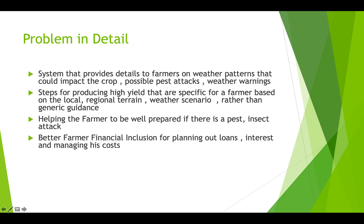The problem statement in detail is: we would require a web portal or a system by which farmers could get information, ask queries regarding weather warnings, pest attacks and so on, steps to produce high yield specific to a farmer based on local regional terrain and weather scenario rather than generic guidance based on the entire city or state. This includes helping farmers be well prepared if there is a pest or insect attack, better farmer financial inclusion for planning loans, interest, and managing costs. This farmer's friend portal would cover financials, weather, crop-related questions, and how to get better yield and high returns.